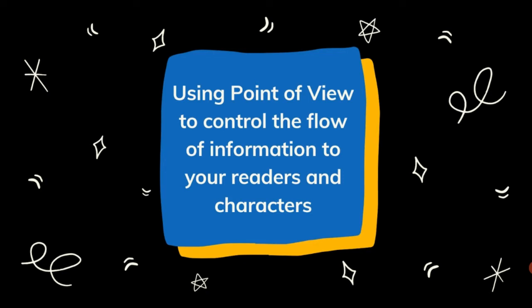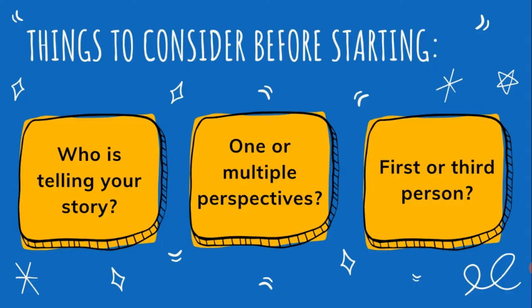One of the first things you should be thinking about when starting a story is to decide who is telling it, or in other words which character or characters you will focus your perspective on. While you the writer may know everything about every character, your reader will only know what you put on the page. This means that if you are telling a story in first person point of view or in third person limited, your reader will only be able to know what the character knows or reveals. If you want your reader to know something, your character will also need to know it.